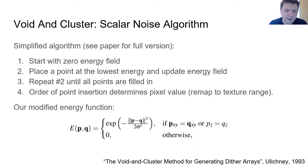So for making scalar noise, we're based on the void-and-cluster algorithm. And the simplified version of this is that you start with a zero energy field and you place a point at the lowest energy and you update the energy field using the energy function. You repeat that second step until all the points are filled in.